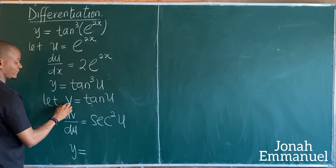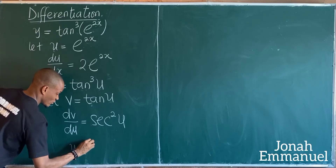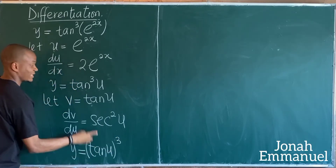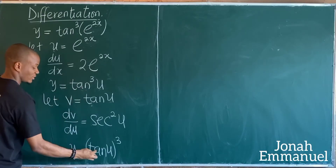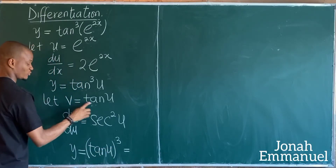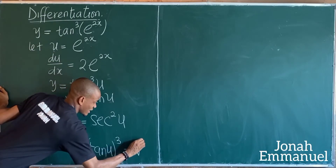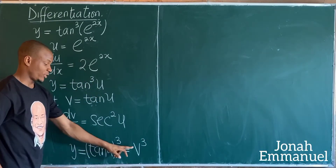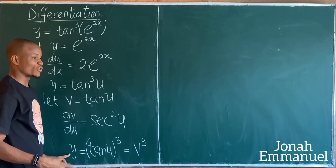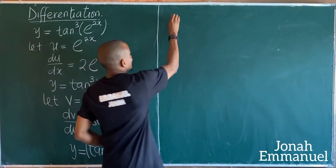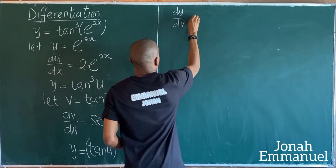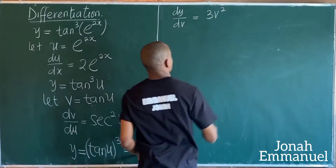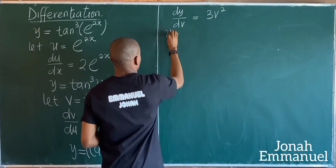We said tan u is v, so y is now equal to v cubed. If I differentiate y with respect to v, I get dy/dv equal to 3v squared. So using chain rule, dy/dx equals dy/dv times dv/du times du/dx.